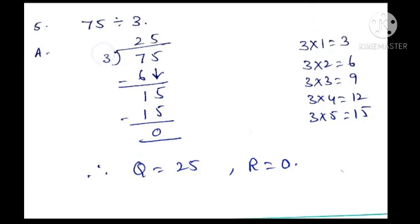See the 3 table. In the 3 table, when do we get 15? 3 fives are 15. This 5 we write above the line, and this 15 we write below the 15. Subtract: 15 minus 15 is 0. Therefore the quotient is 25 and the remainder is 0.